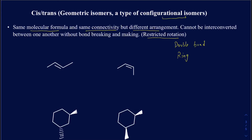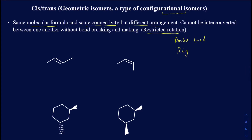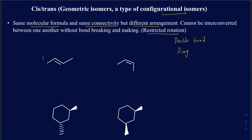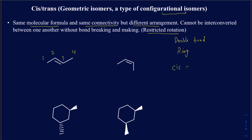Let's take some examples. I have this first one where I have four carbons in the chain. To better identify whether it's going to be cis or trans: cis means you're going to have the same groups or similar groups on the same side, and for trans, you're going to have them on opposite sides. You can look at the big groups being on the same side or the big groups being on the opposite side. If the small groups are on the same side, that's cis, and if the small groups are on opposite sides, that's trans.